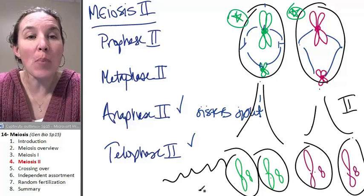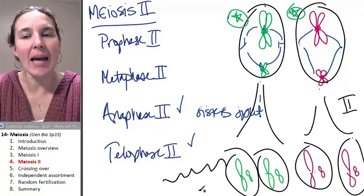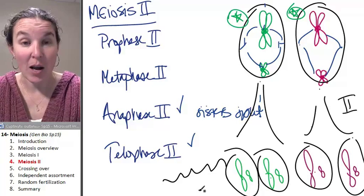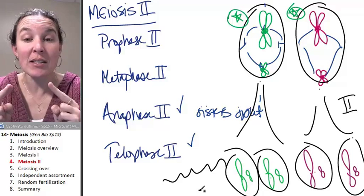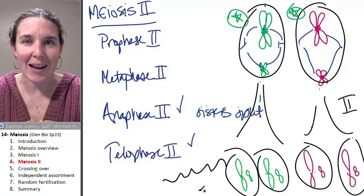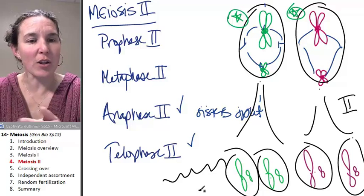There are some parts of meiosis. Number one, it gets us a haploid chromosome number. But number two, there are things that are happening in meiosis that promote genetic diversity. So we're going to look at those things.